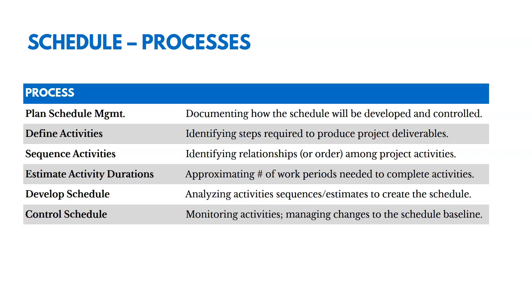Then we're going to define activities, identifying steps required to produce the project deliverables. When we talked about scope management, we created the work breakdown structure. The lowest level of the WBS are work packages — I like to think of those as nouns. If you're constructing a house, it's a roof, the foundation, the walls, the plumbing. With activities, we take that one step further and develop actions to complete those things. So for a roof, activities might be hiring a roofer, securing the materials, installing the roof, checking it for leaks. Oftentimes activities start with a verb.